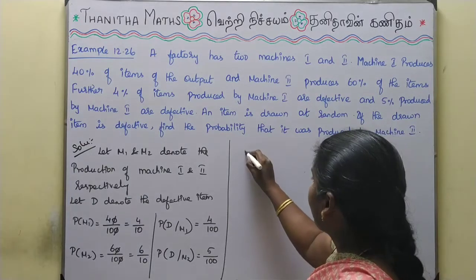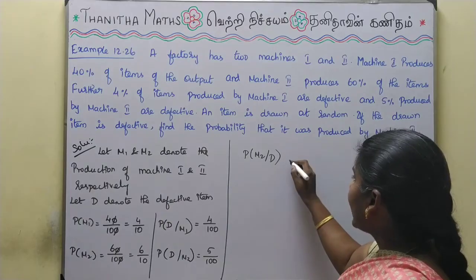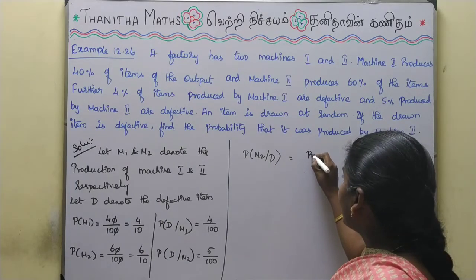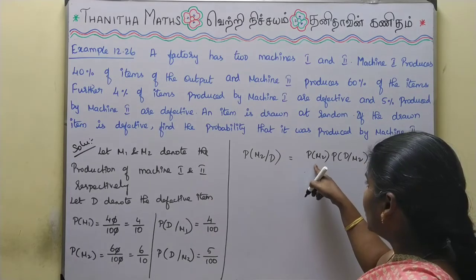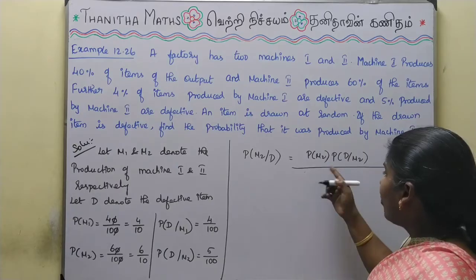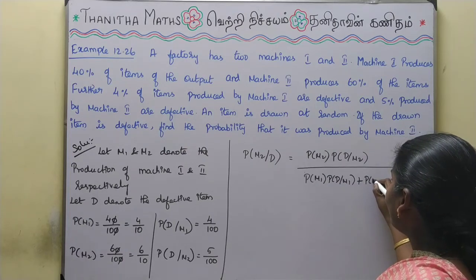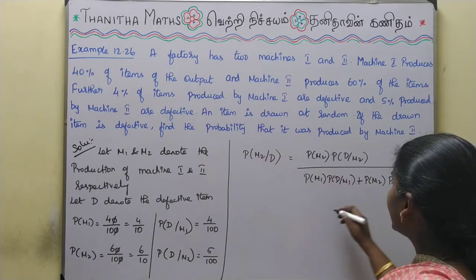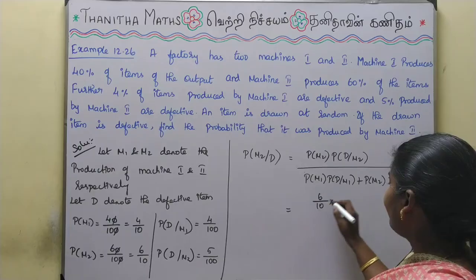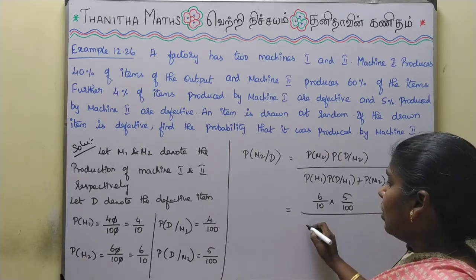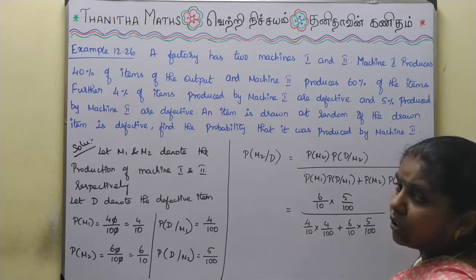We want P of M2 given D. Using Bayes' theorem: P of M2 given D equals P of M2 into P of D given M2, divided by P of M1 into P of D given M1 plus P of M2 into P of D given M2. Substituting, the numerator is 6 by 10 into 5 by 100, which is 5 by 100.